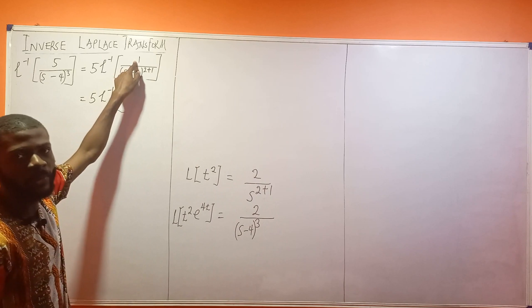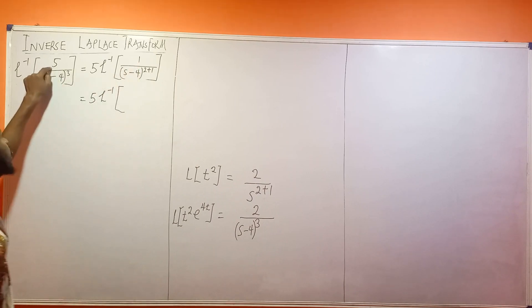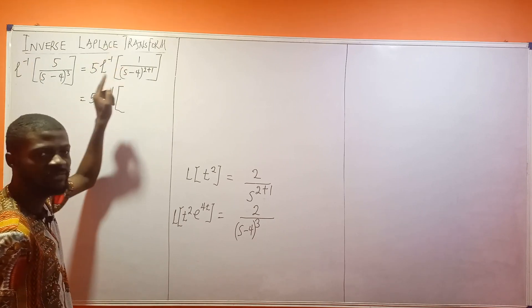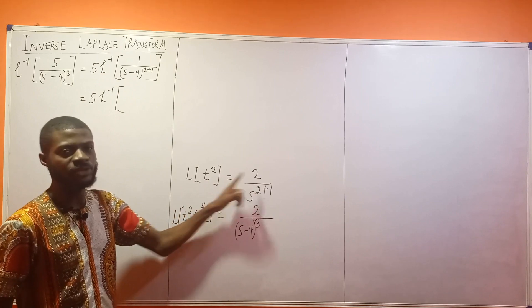So 2 must be at the top. But right now, there's no 2 at the top. Instead, we have this 5 here. That's why I removed it - let it go its own way first. So it means at this very top, we must have a 2.